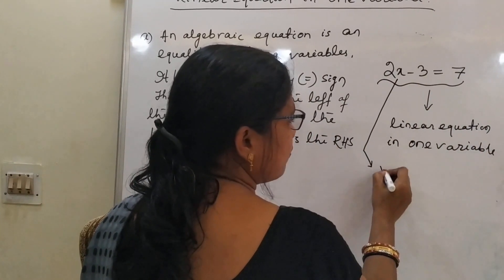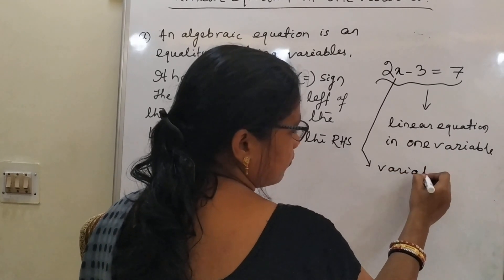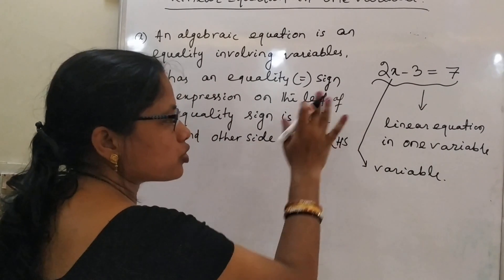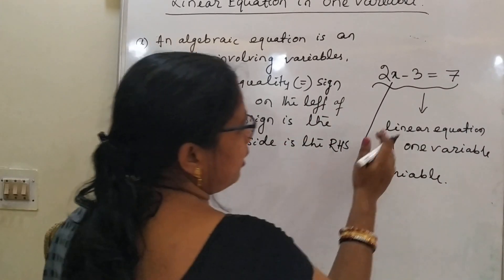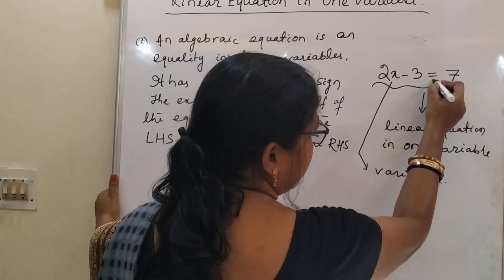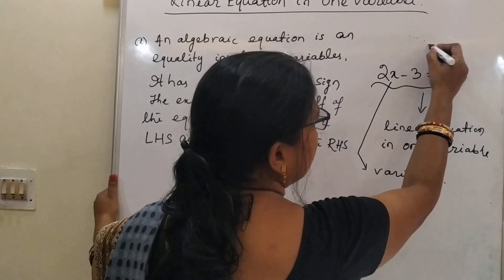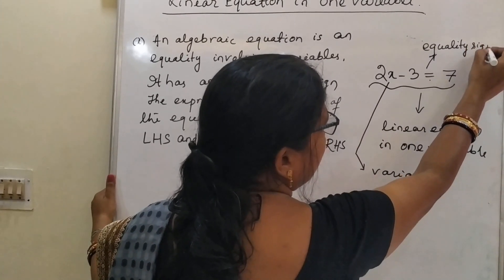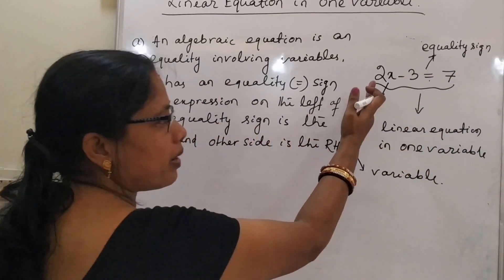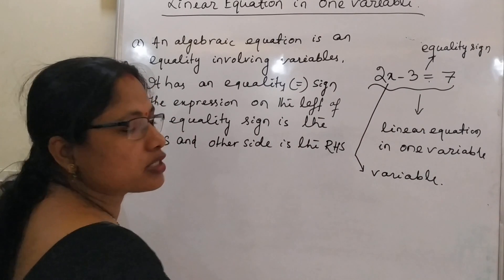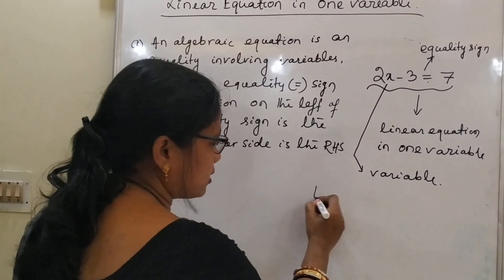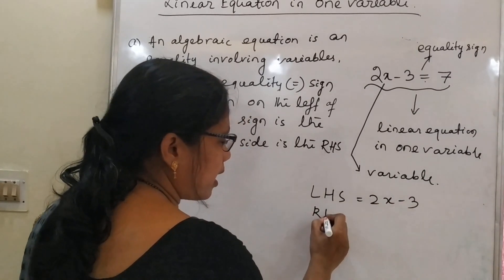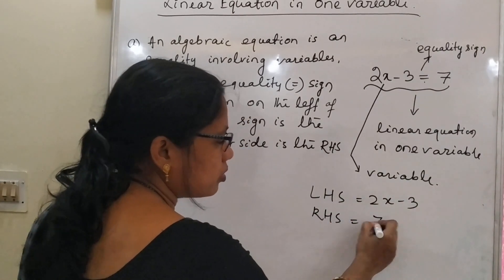Taking the example 2x minus 3 is equal to 7: here x is the variable, and the degree of x is 1, so it is a linear equation. The equality sign separates the equation. The left-hand part is called the left-hand side or LHS, which equals 2x minus 3, and the right-hand side or RHS equals 7.